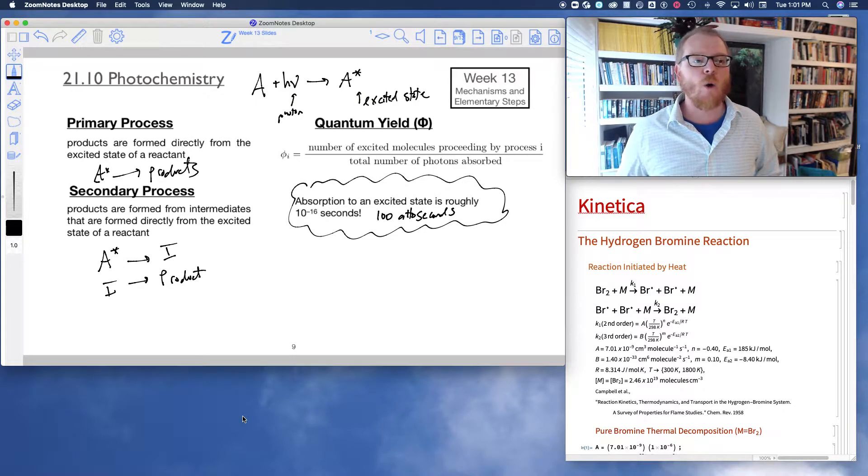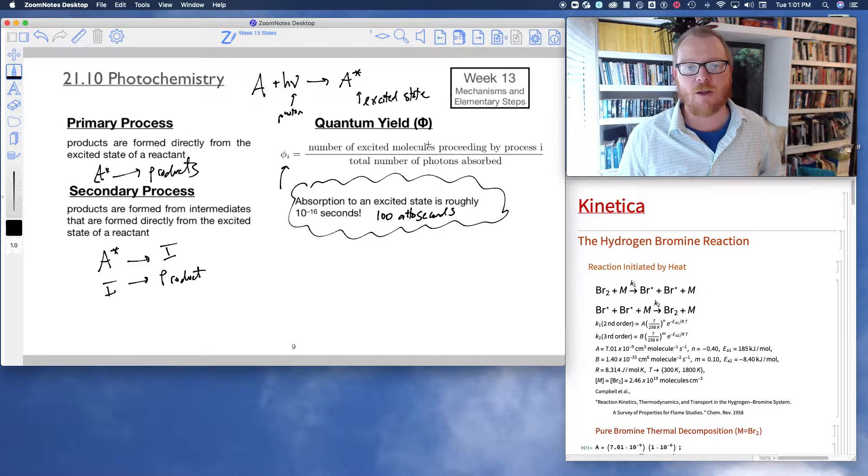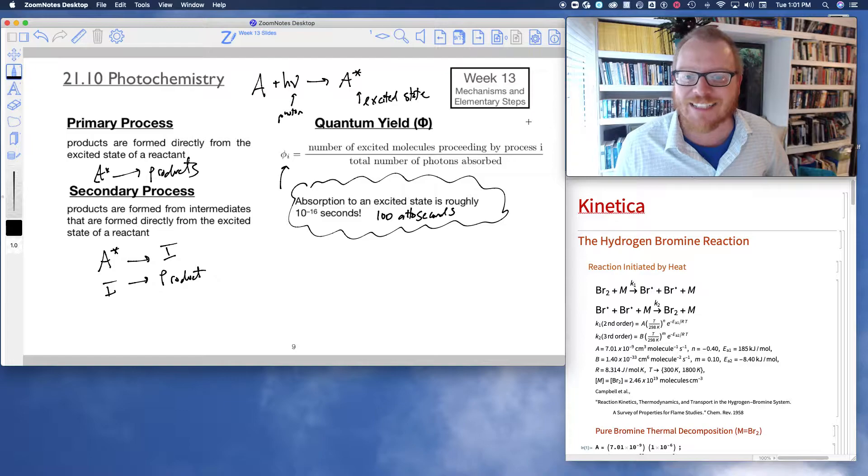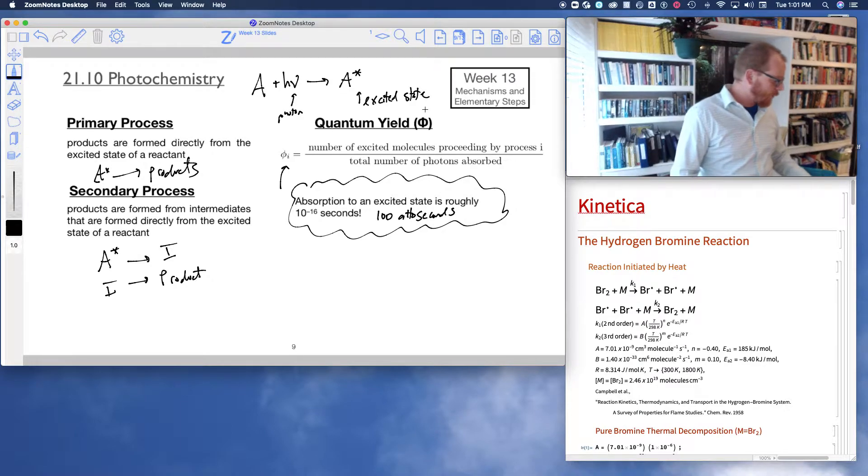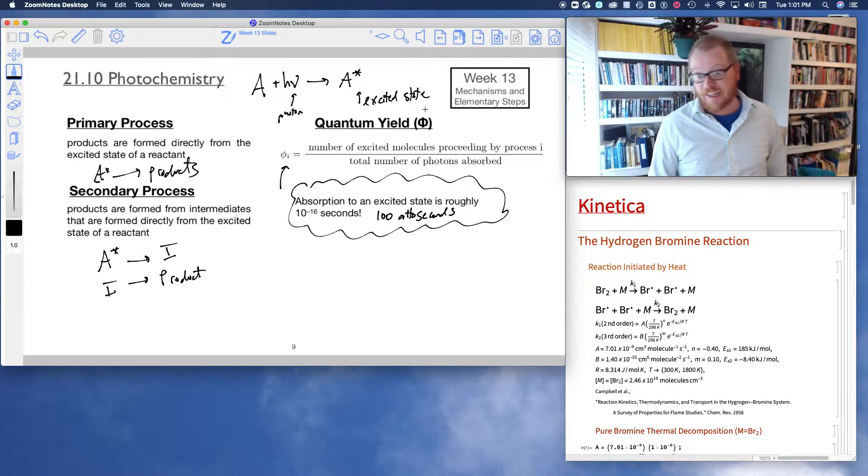And so we classify these processes, or I should say we quantify them by the quantum yield, phi. So this definition is number of excited molecules proceeding by process I divided by the total number of photons absorbed. So there's a couple different ways we could think about that.